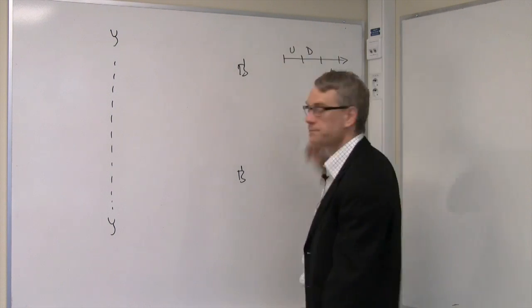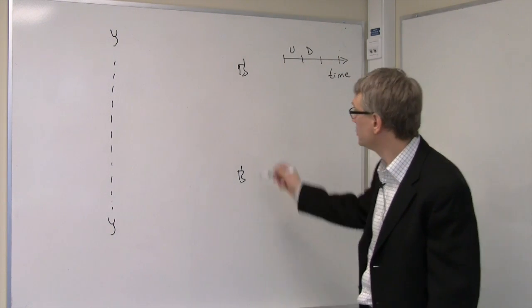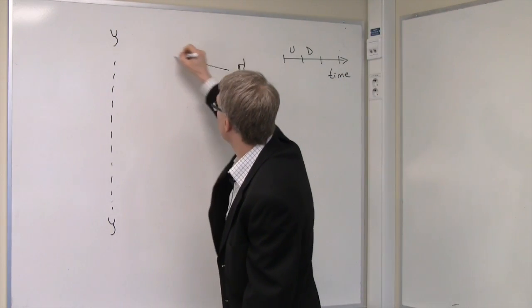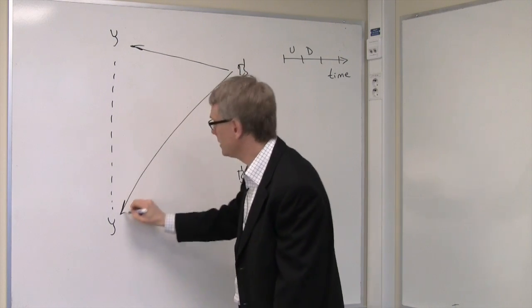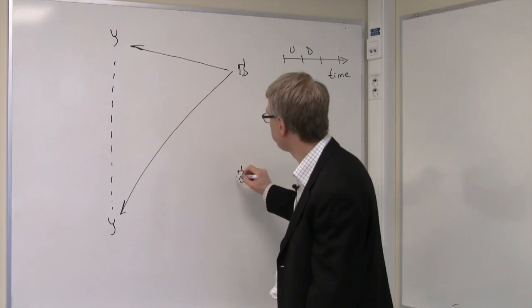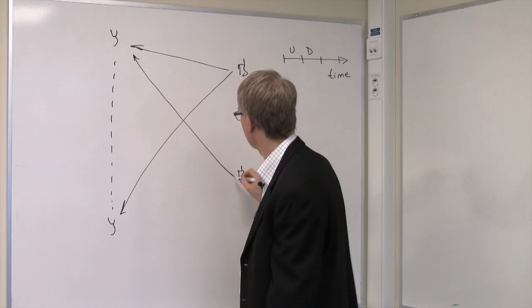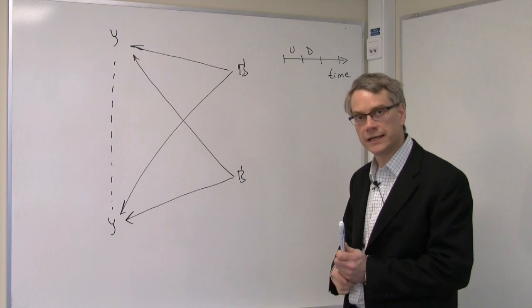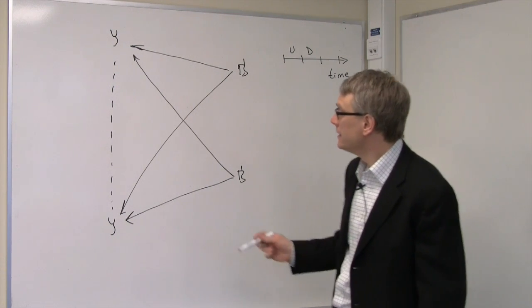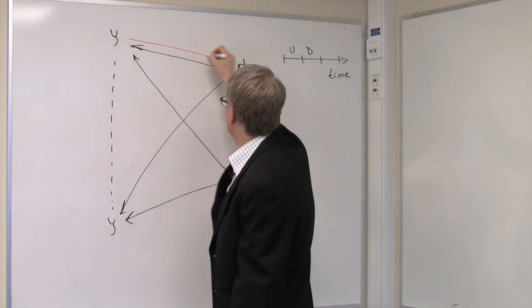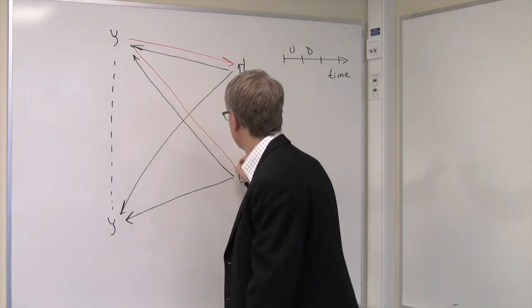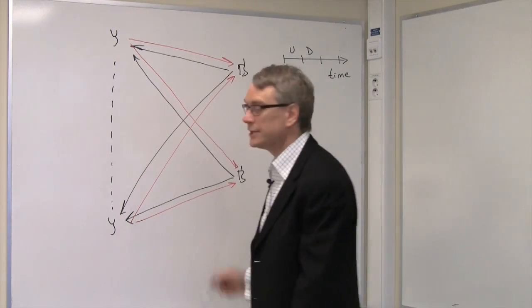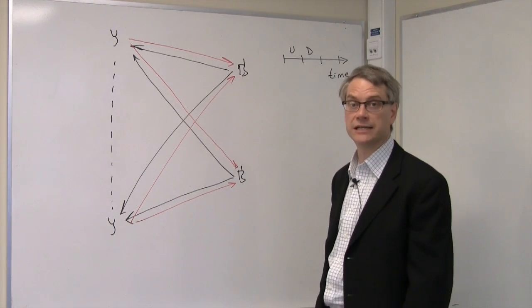Up, down. During the uplink the terminals transmit to the base station array. And they all transmit simultaneously. And all the base station antennas listen. And then after the uplink comes the downlink. And in the downlink the base station array transmits. It transmits and all the terminals listen simultaneously. And during the downlink all the base station antennas are simultaneously active.